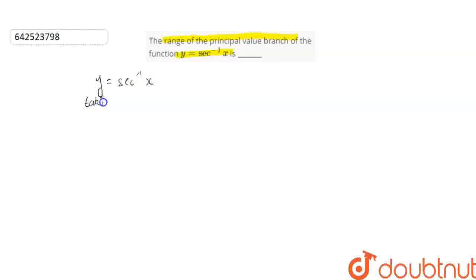Taking secant on both sides, this gives us secant y equals secant of secant inverse x. Secant and secant inverse get cancelled and it gives x.